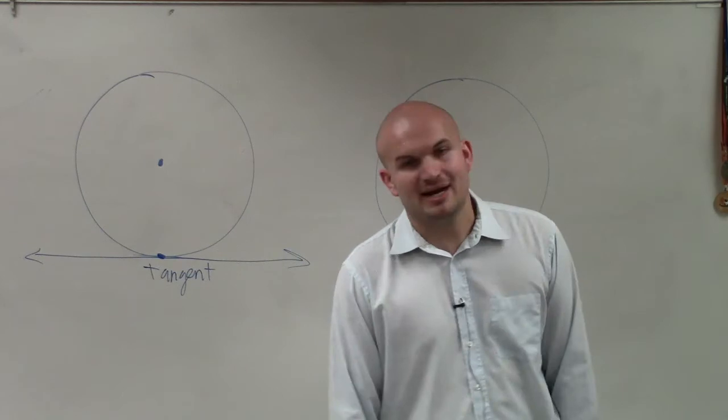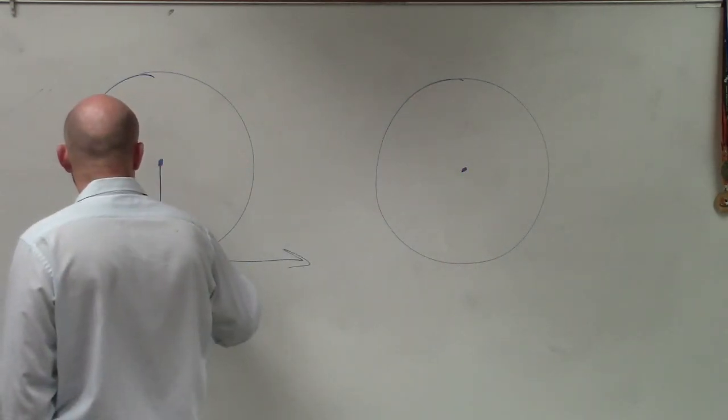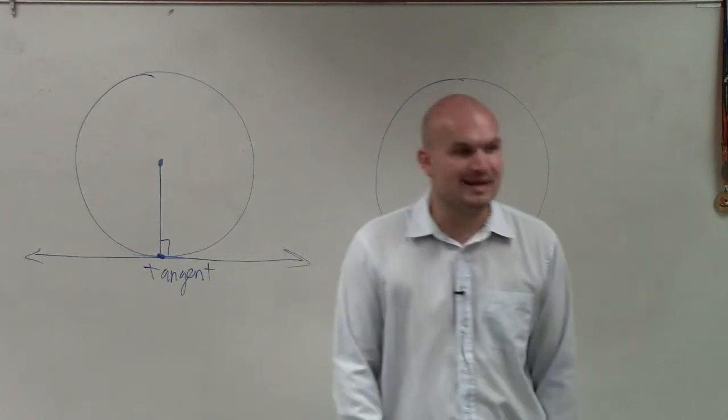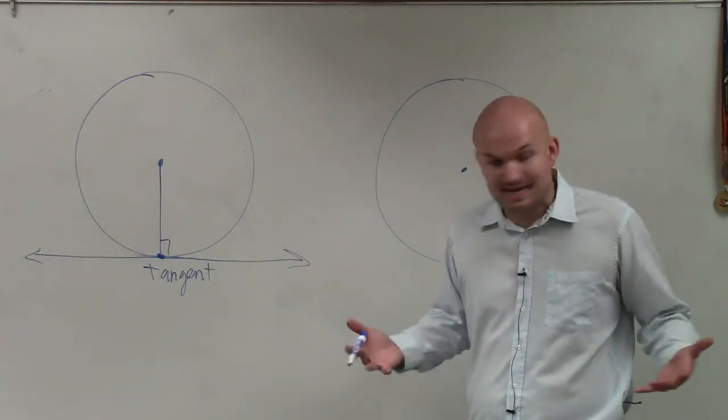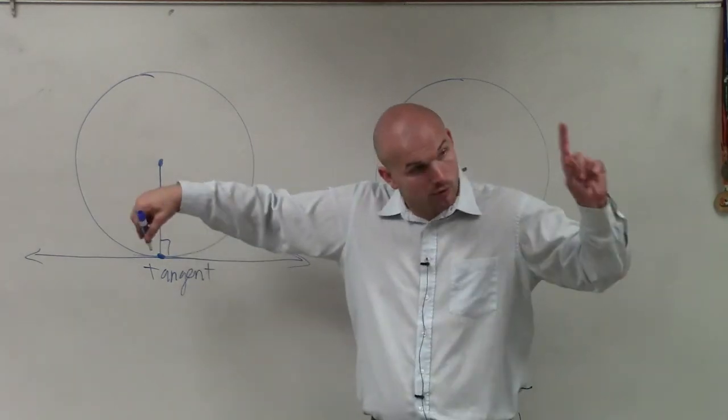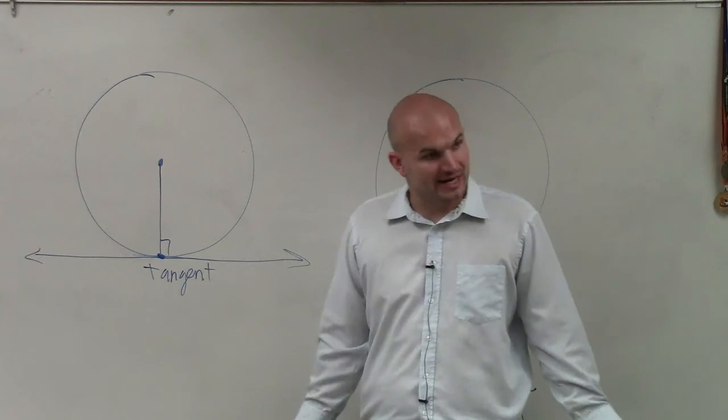Now what is important to know about a tangent line is a tangent line can be drawn perpendicular to a radius. So when we're talking about a line that's tangent, it only intersects a circle at one point and it will be perpendicular to a radius that you can draw.